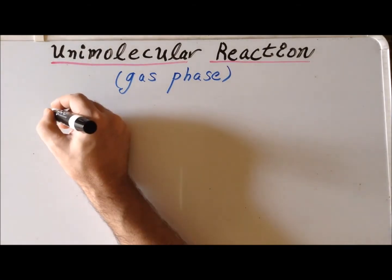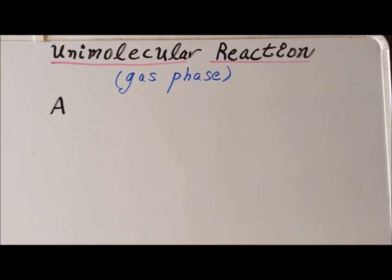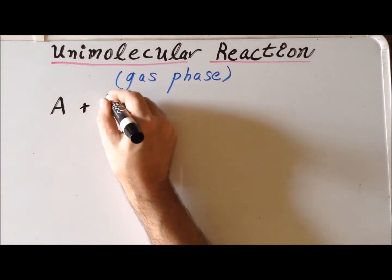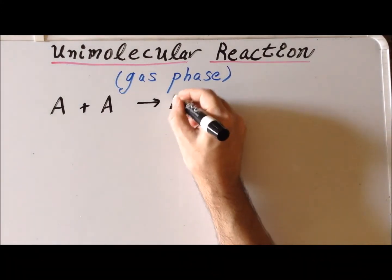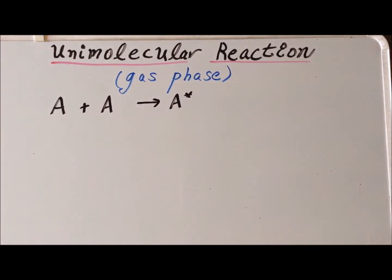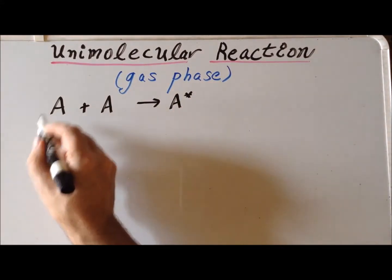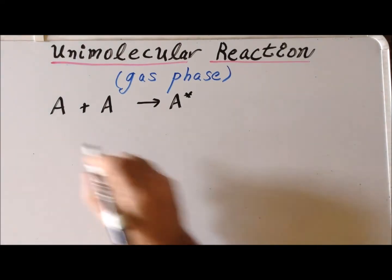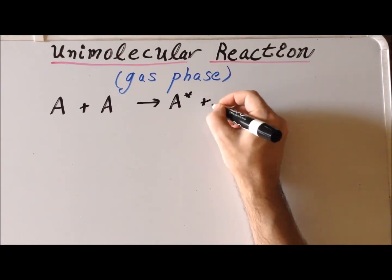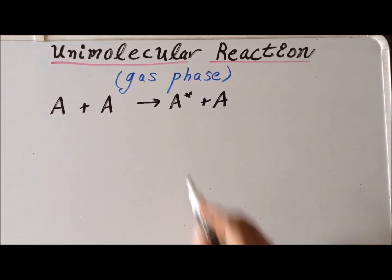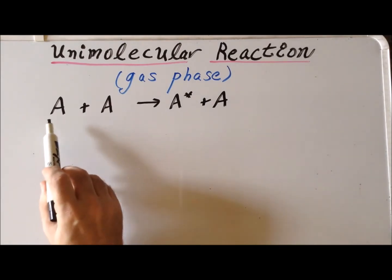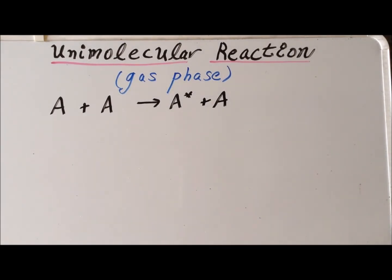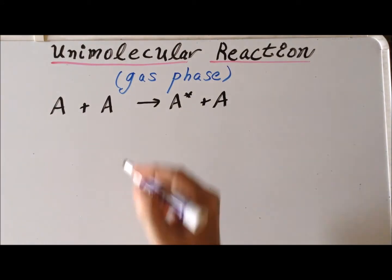Suppose that two gas molecules, each of which we're going to represent with the letter A, collide. And in the process of this collision, they form an activated complex A*. So A* is an A molecule that has enough energy to react. In the process of collision, energy will transfer from one A molecule to another A molecule.